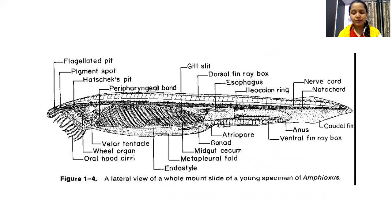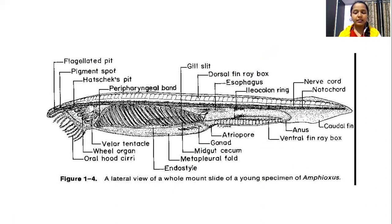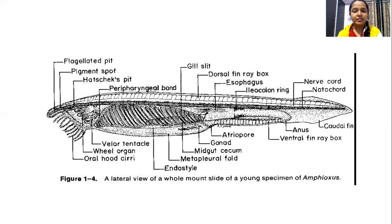When you look into the morphology of amphioxus — the external features — these Branchiostoma, the amphioxus, can grow up to 3.5 to 6 centimeters in length. These are slender, translucent, and fish-like worms. These are laterally compressed organisms, hence these are called the lancet worms.